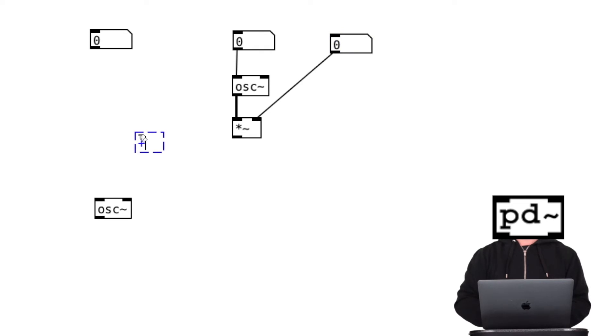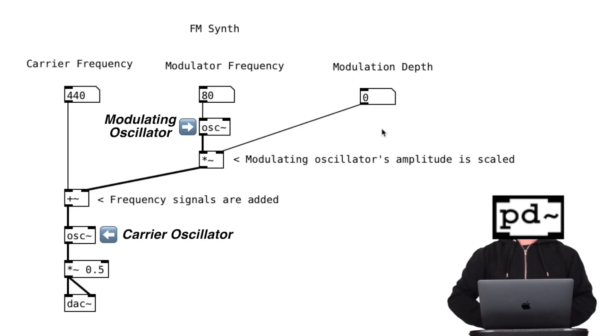And we need to combine the modulator to carrier frequency by using plus tilde. And have times tilde 0.5 just to make the overall volume quieter. And connect it to the DAC tilde. And we did it.